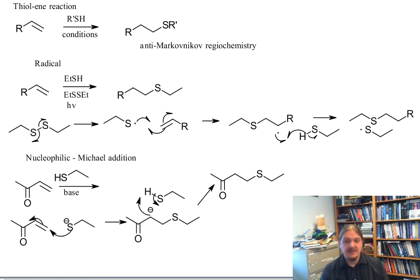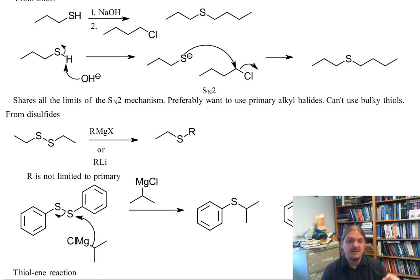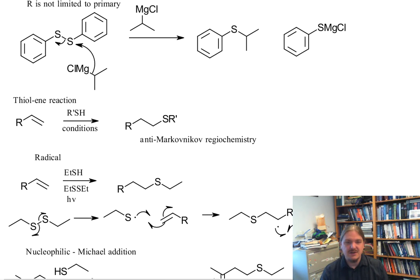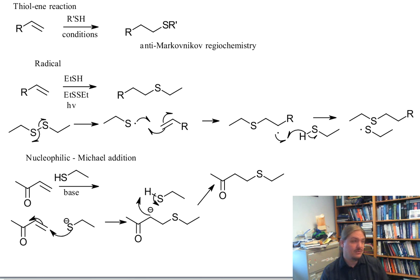So lots of ways we can make sulfides. Some of them rely on the nucleophilicity of thiols. Some of them rely on the electrophilicity of disulfides. And then there's the thiolene reaction, which either has a radical version or a nucleophilic version, depending on the structure of the alkene. Thank you for watching.